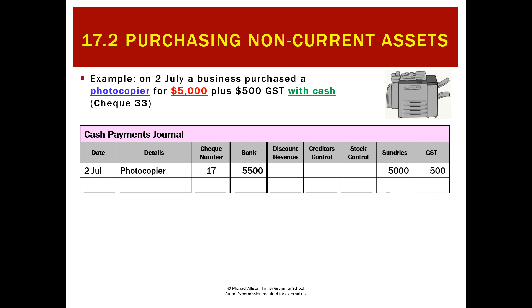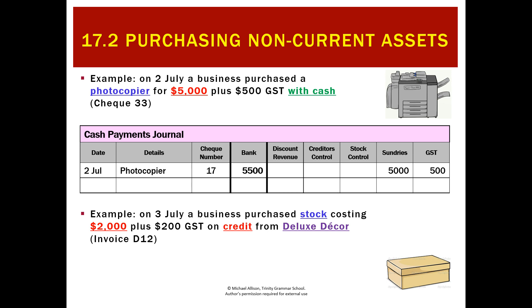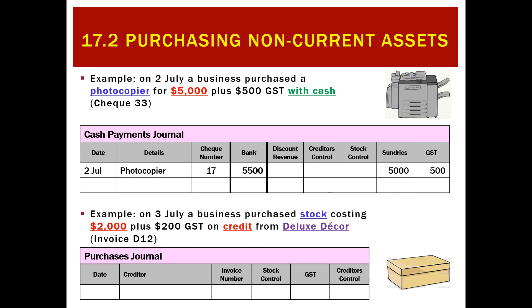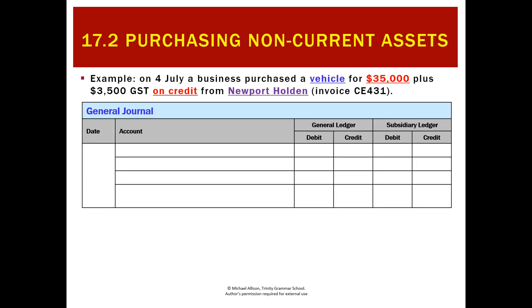What about buying stock costing $2,000 plus GST on credit from Deluxe Decor? This is nothing new — it goes in the purchases journal. We enter the date, the creditor's name, the invoice number, the stock amount of $2,000, $200 GST, and we owe $2,200 to the creditor.